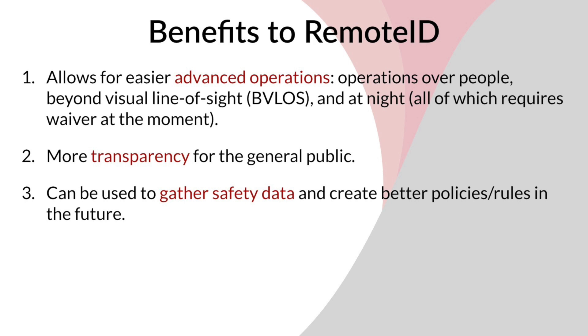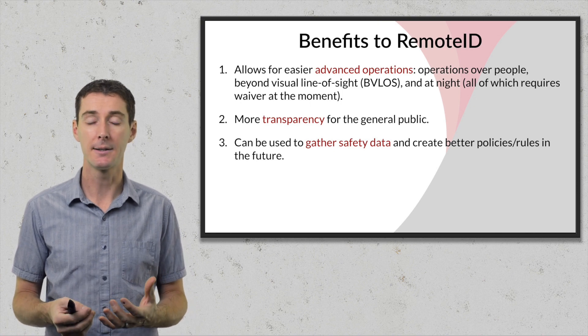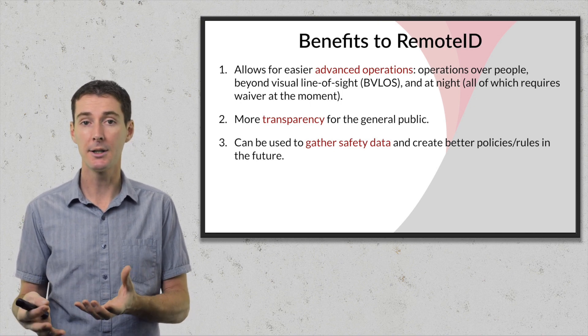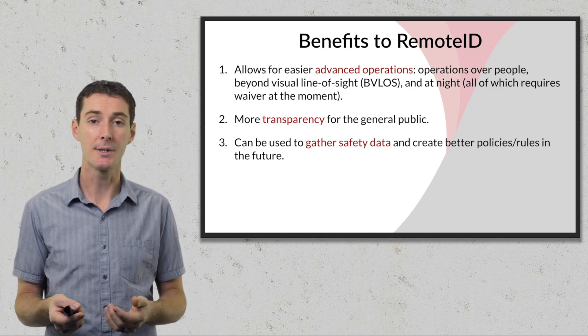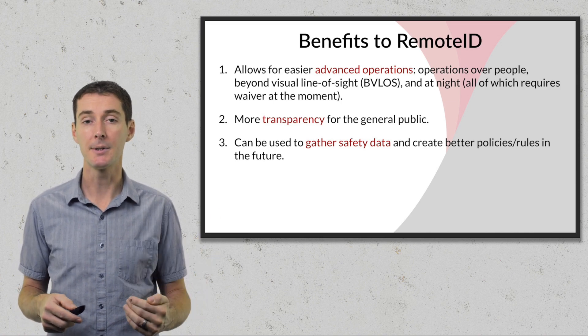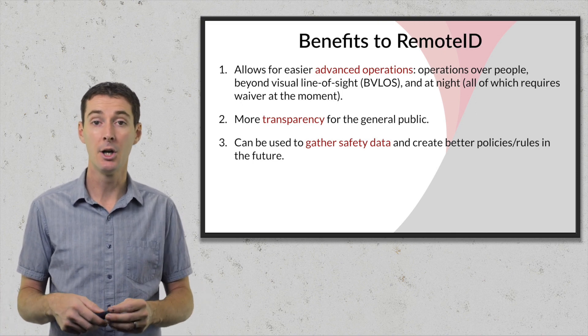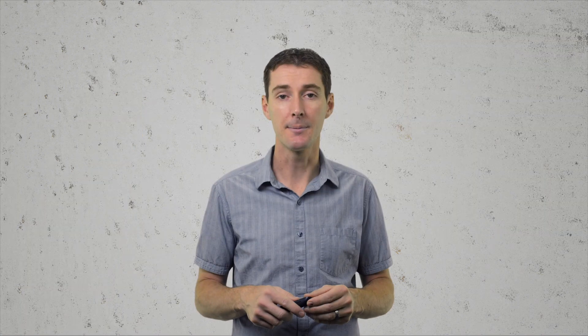Another benefit is that Remote ID can be used to gather safety data and help create better policies in the future. At this stage we have no system to collect data and see if people are actually operating dangerously or following the rules. This would help determine if people are being safe, and whether we actually need more, less, or different regulation — because the data would show us something concrete.